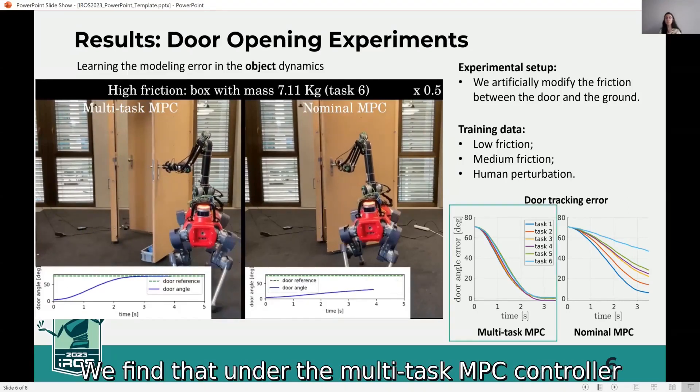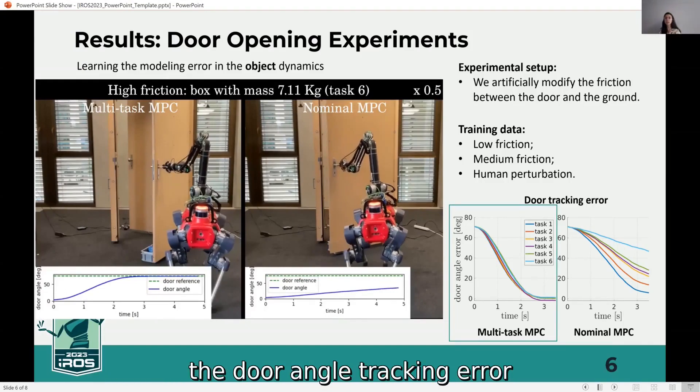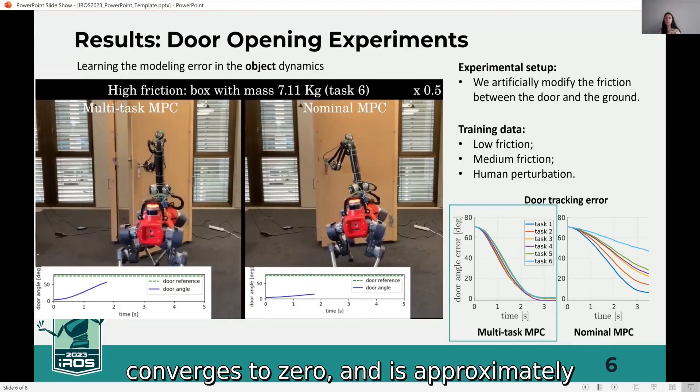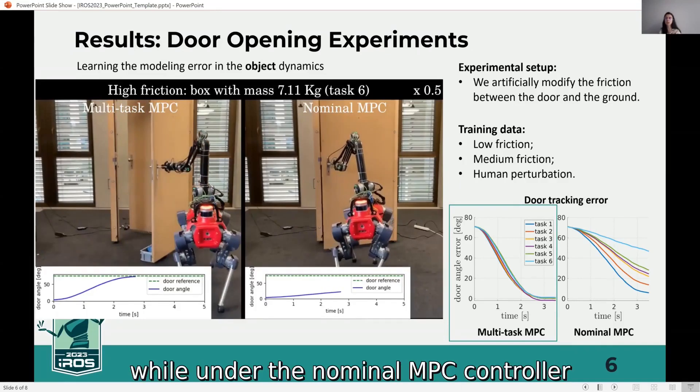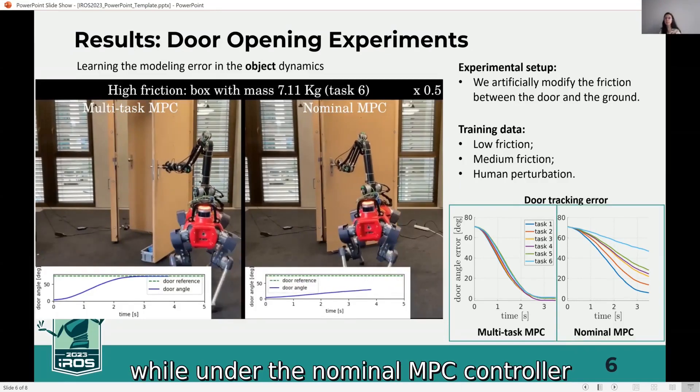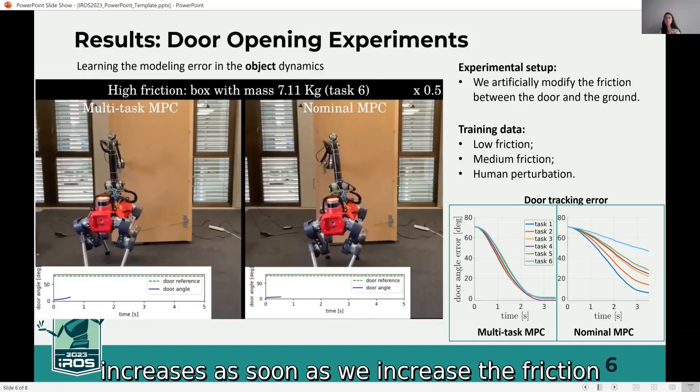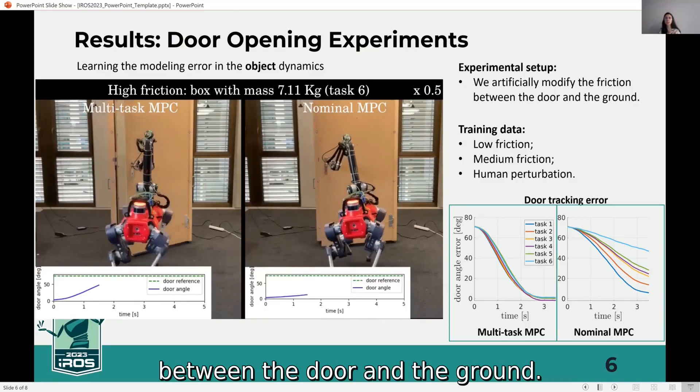We find that under the multi-task MPC controller, the door angle tracking error converges to zero and is approximately the same across the tasks, while under the nominal MPC controller, the door angle tracking error increases as soon as we increase the friction between the door and the ground.